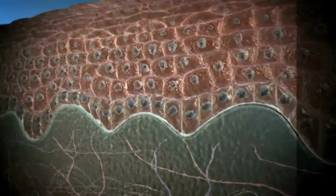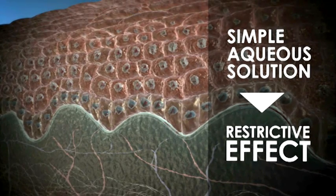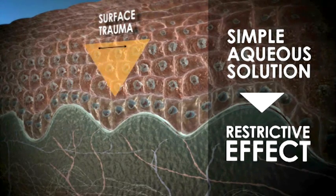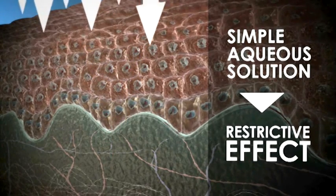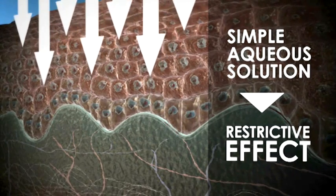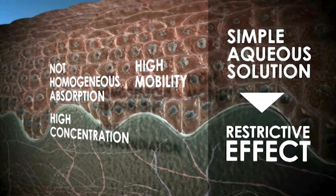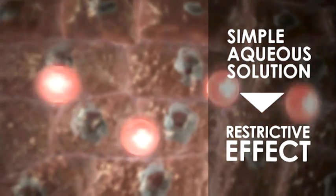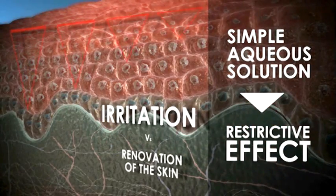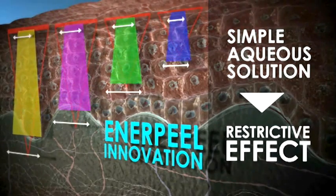Chemoexfoliation obtained using a simple aqueous solution of an organic acid is characterized by an important restrictive effect. The intensity of the surface trauma is not proportional to the acid's ability to renew the epidermis and to remodel the dermis. The superficial trauma depends on the non-homogeneous absorption of the solution, the high concentration of protons, and their high mobility in the original solution — with concentration and mobility values already at their highest levels. The result is that the relationship between trauma and chemoexfoliation efficiency is skewed towards irritation rather than skin renewal and remodeling. These are the reasons why innovation is required.